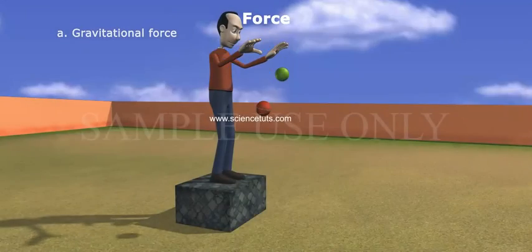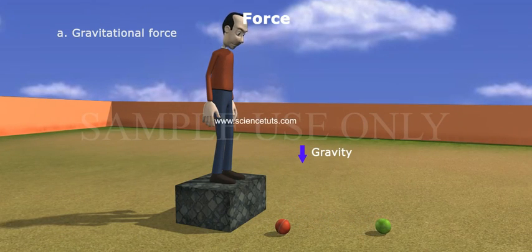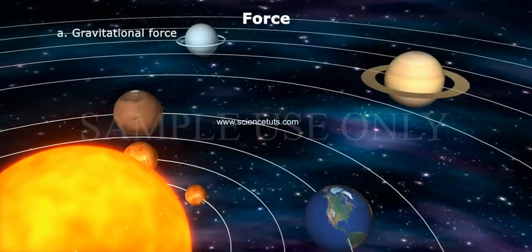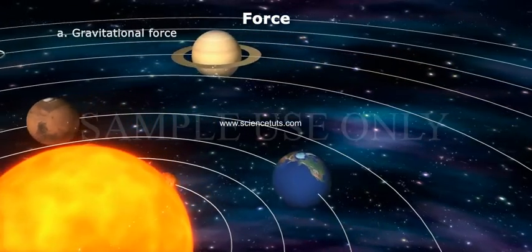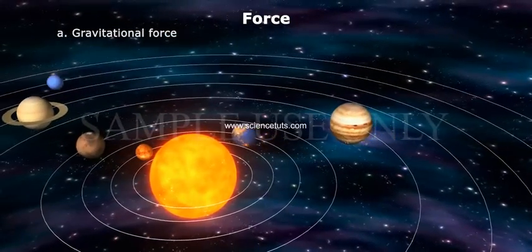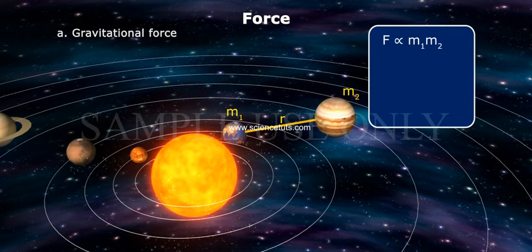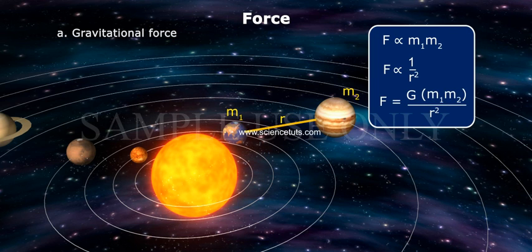A. Gravitational force: Which is responsible for the attraction between various bodies in the universe. The magnitude of the force is directly proportional to the masses of the bodies and inversely proportional to the square of the distance of separation. F is directly proportional to M1, M2 and F is directly proportional to 1 by R square. Therefore, F is equal to G into M1, M2 by R2.